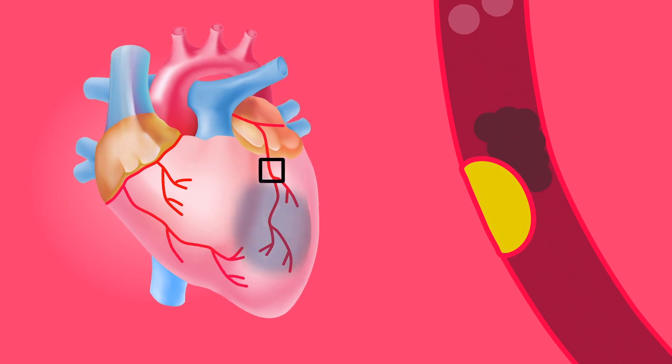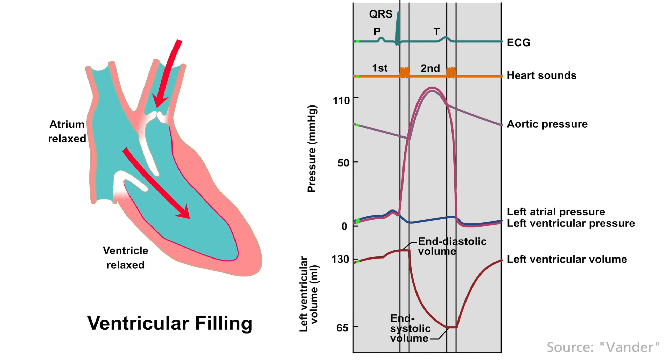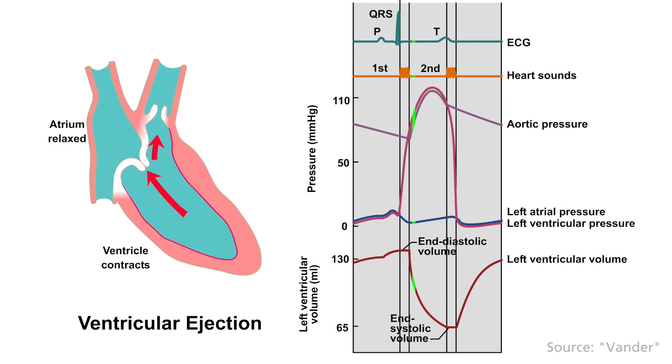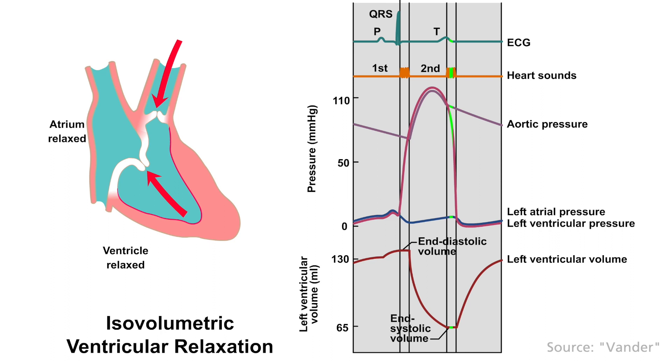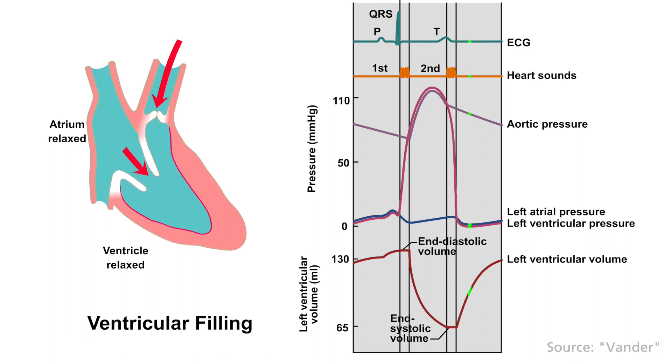In a normal situation at rest, the heart beats around 60 times a minute, where blood flows from the atria to the ventricle simply by pressure differences. Once the heart contracts, the AV valves close due to the opposite pressure difference, while semilunar valves open a bit later as ventricular pressure exceeds pressure on the outside of these valves.